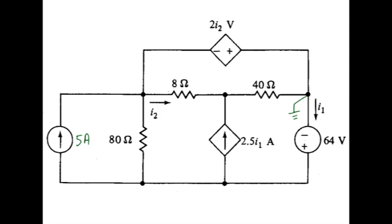So that means that this bottom node is now at 64 volts above ground. And this source contributes then a potential difference of minus 2i2 at this node. So the only node we have to write an equation at now is in the center, and I'll call that v sub x.